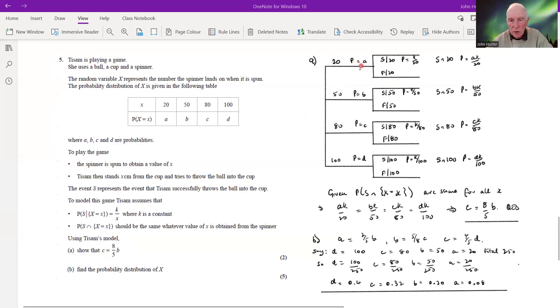So here is our probability tree. We've got these four different outcomes from the spin of the spinner, and we can throw any of these values. The probability associated with each one is a, b, c, and d. And if we take each one in turn, what we're saying is the probability of a success given that we threw a 20 is going to be equal to k divided by 20.